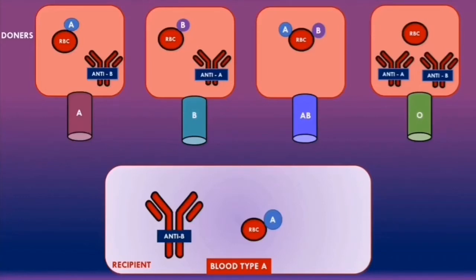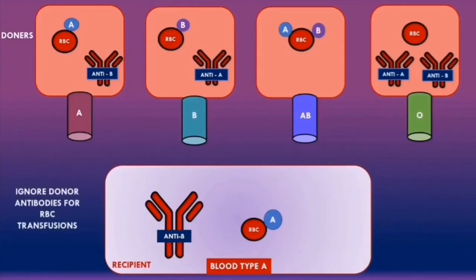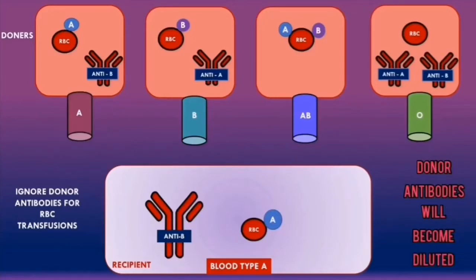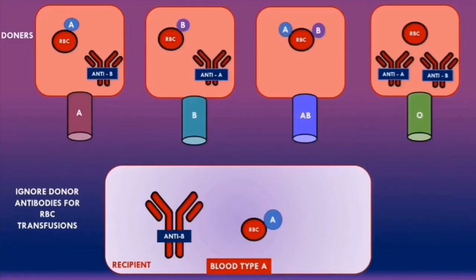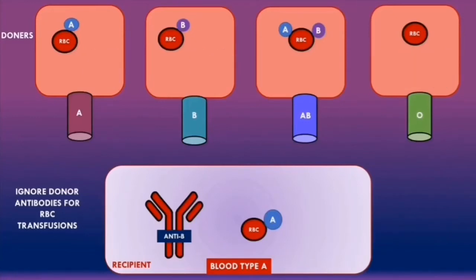To understand which ABO blood types are compatible with a recipient's specific blood type, there are two important principles. First, ignore the donor antibodies for red blood cell transfusions, because they become diluted in the recipient's blood. Second, if the recipient has antibodies against the donor antigens, then the transfusion is not compatible.